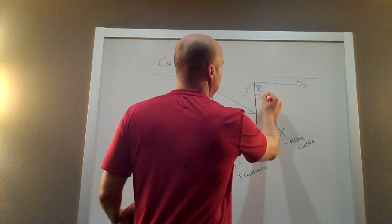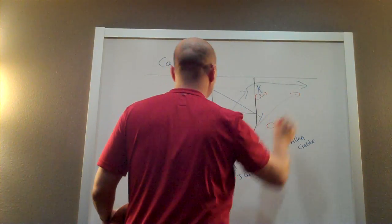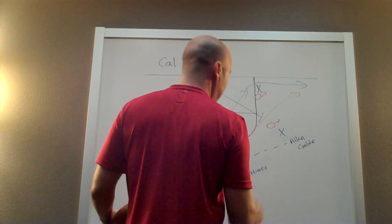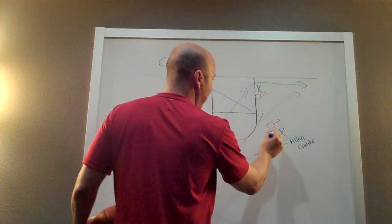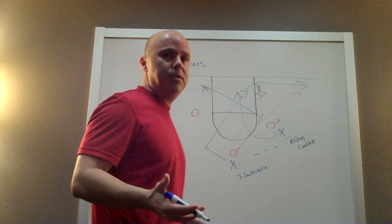So here's what happens. The defense starts to cheat over just a little bit. This guy carries through to the baseline. So the key here is for Alan Crabb, if he can get that one step on his defender, he can go right into the lane and that's two points.